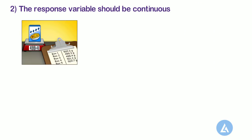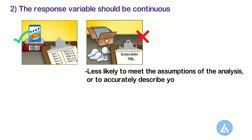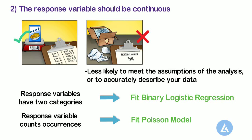Second, the response variable should be continuous. If the response variable is categorical, your model is less likely to meet the assumptions of the analysis to accurately describe your data or to make useful predictions. If your response variables have two categories, use fit binary logistic regression. If your response variable counts occurrences, such as the number of defects, use fit Poisson model.